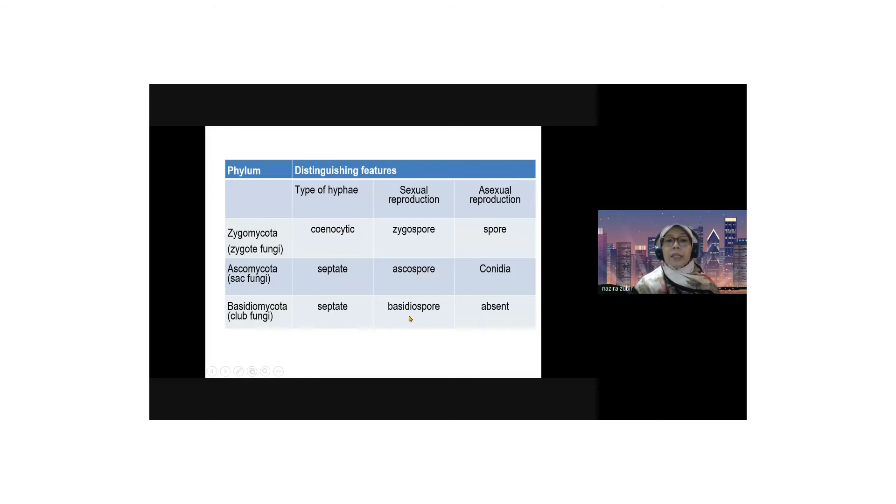So four basidiospores are located in each of basidium. So basidium is a structure that consists of these basidiospores, and this basidia or basidium are located on the fruiting body known as basidiocarp. That's for sexual.